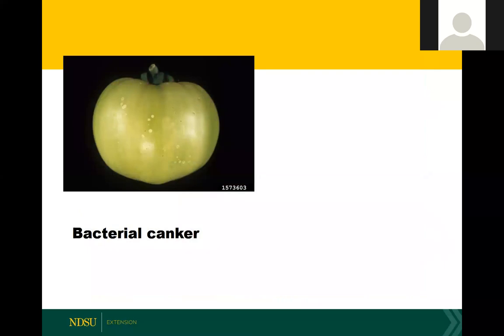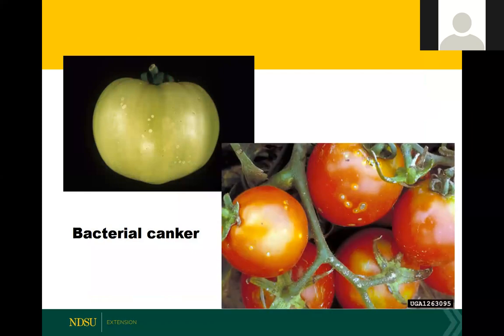If you cut into a stem infected with bacterial canker, you'll see brown vascular tissue inside. The stems may develop a canker, split open, and the whole plant will wilt. This pathogen is very severe — it only takes one out of 10,000 plants to be infected to create a serious epidemic. On the fruit, you'll see small white blisters that become much more noticeable as the fruit ripens and the contrast increases.